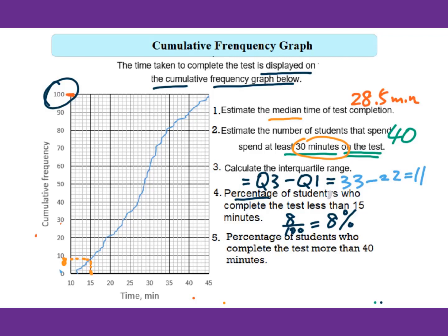Also, we're looking for percentage of students who complete the test more than 40 minutes. Find the 40 first, go here. You will find 90. More than 40 minutes is only from here to here. That means only 10 students spend more than 40 minutes on the test, because from 100 to 90, that is 10 people. 10 people divided by 100 total, that's 10 percent.